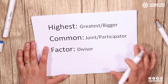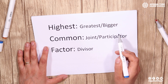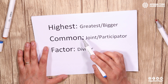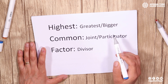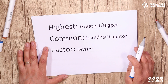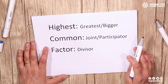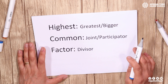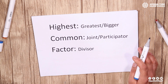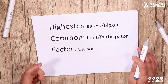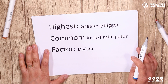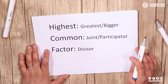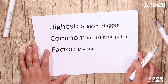Highest means greatest or bigger. Common means joint or participator — it means one thing shared between two numbers. And factor means divisor. So the meaning of the highest common factor is finding the greatest or bigger joint divisor between two or three numbers.